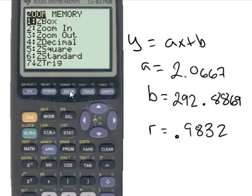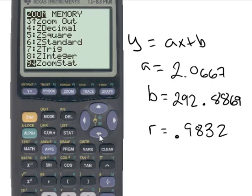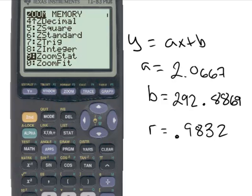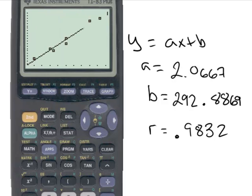And now if I hit zoom, you can arrow down to STAT. And there you have it. You have your line.